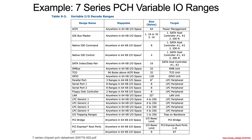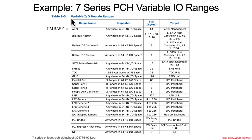Here's an example of a table from one of the PCH data sheets, specifically the 7 series, that talks about a bunch of different ranges that can be anywhere in the 64 kilobyte IO space. Out of these ranges, the first one we're going to see the most is the ACPI range.